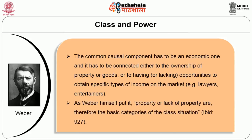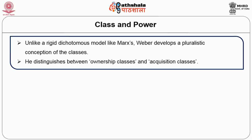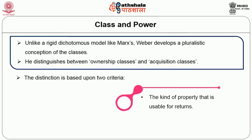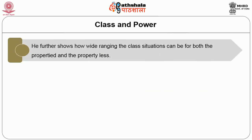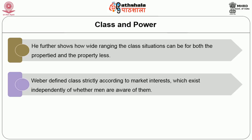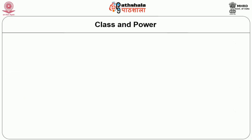As Weber himself put it, property or lack of property are the basic categories of class situation. Unlike Marx's rigid dichotomous model, Weber developed a pluralistic conception of class, distinguishing between ownership classes and acquisition classes, based on: the kind of property usable for returns, and the kind of services that can be offered on the market. Weber defined class strictly according to market interests, which exist independently of whether individuals are aware of them. Hence class is an objective characteristic influencing the life chances of individuals, distinct from status, which acquires a subjective character.